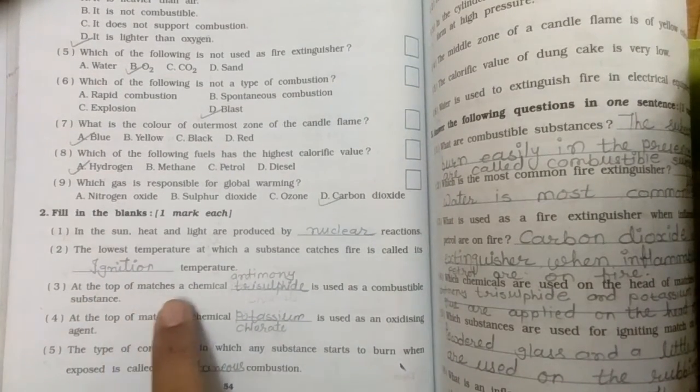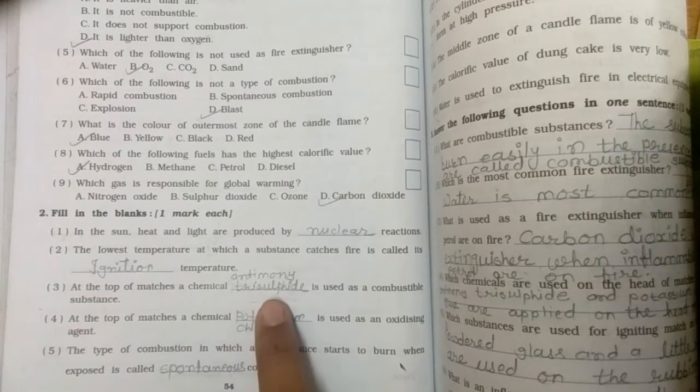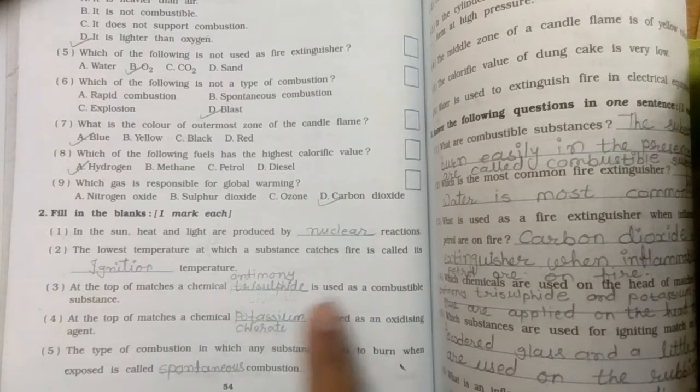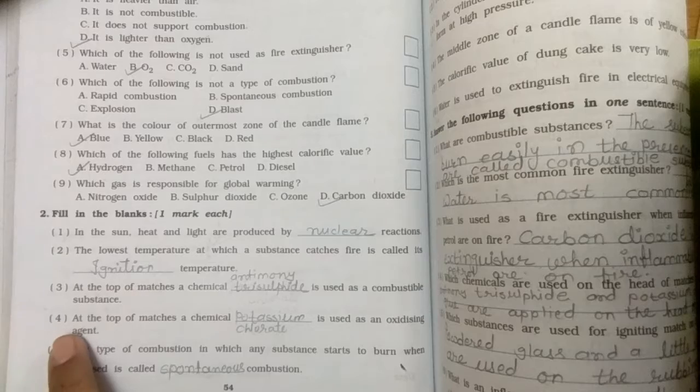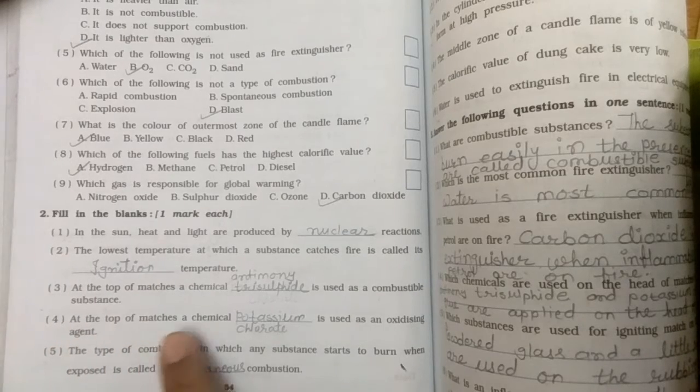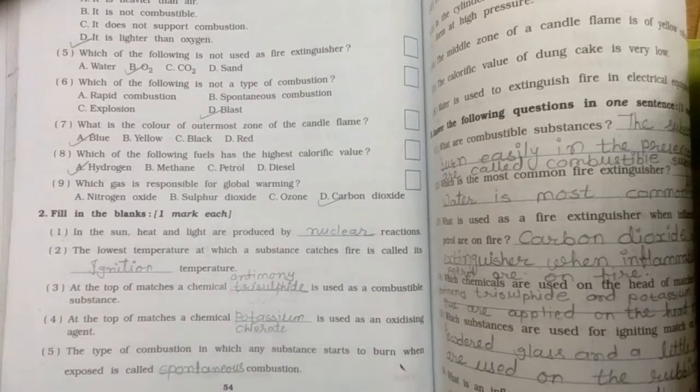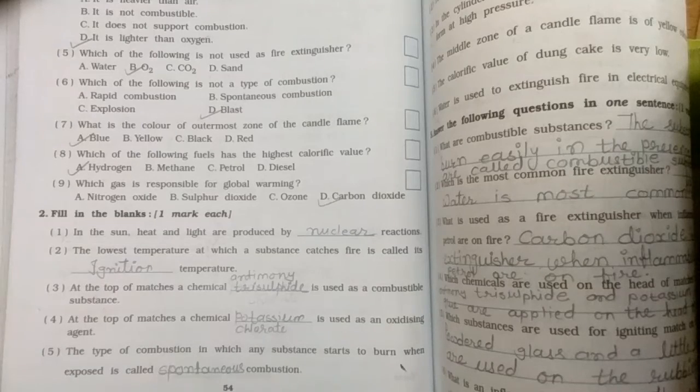Third, at the top of the matchstick, a chemical antimony trisulphide is used as a combustible substance. Fourth, at the top of the matchstick, a chemical potassium chlorate is used as an oxidizing agent.